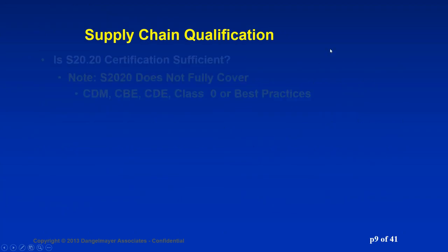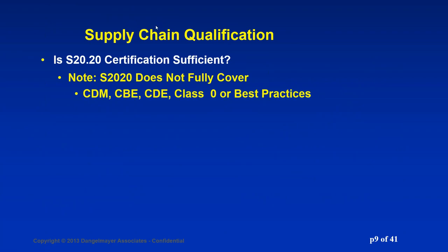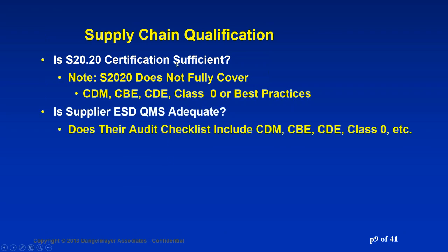Let's talk about supply chain qualification. First, is S-2020 sufficient? Does it cover all the requirements necessary for your products? For instance, if you have extreme sensitivities such as class zero, 2020 only partially covers that. The same is true for charge device, charge board, cable discharge, and best practices. Keep in mind that 2020, as good as it is and it is the best, does not fully cover critically important topics. And chances are your supply chain is going strictly by 2020.